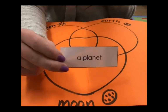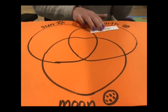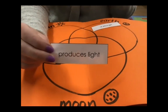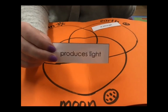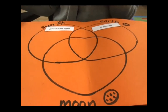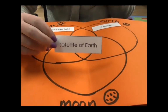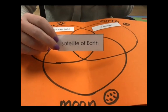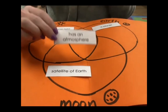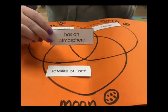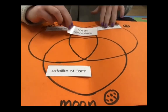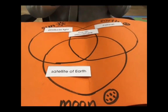The first one says 'a planet.' Hopefully you came up with that this is just referring to the earth — the earth is the only one out of these three that is a planet. This one says 'produces light' — the sun is the only one out of these three that produces light. 'Satellite of earth' — this is referring to just the moon; the moon is a satellite of earth. 'Has an atmosphere' — the sun and earth both have an atmosphere, so I'm going to put it where sun and earth overlap. The moon does not have an atmosphere.